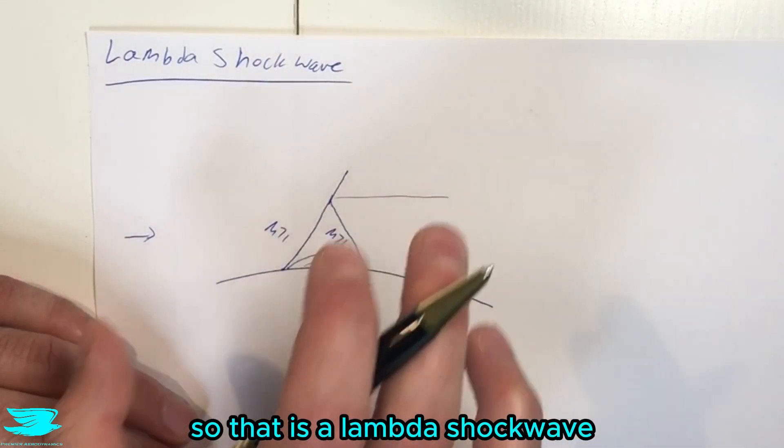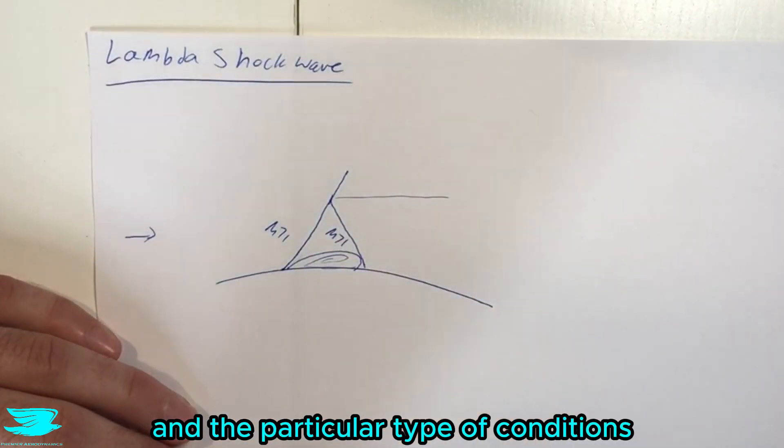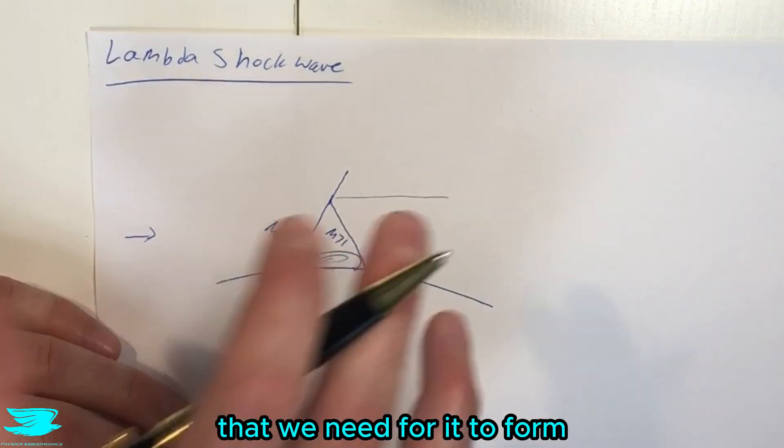So that is a lambda shockwave and why it is so strange in the particular type of conditions that we need for it to form.